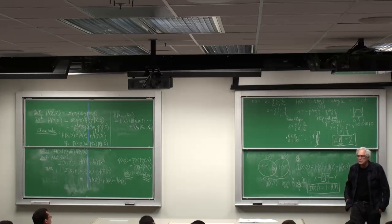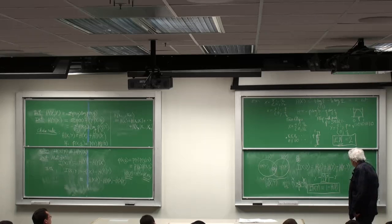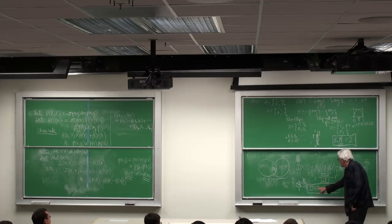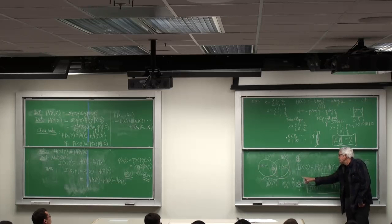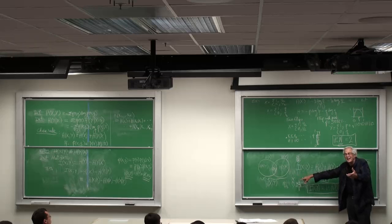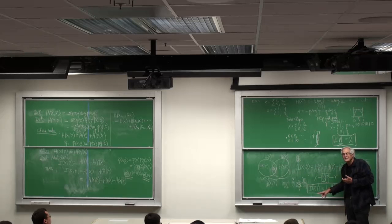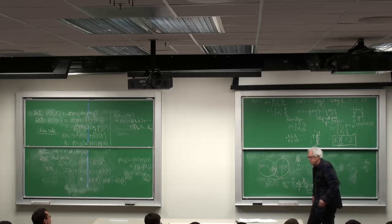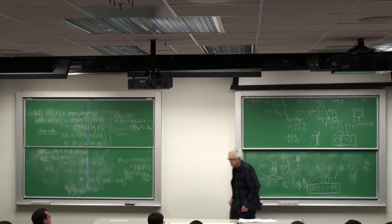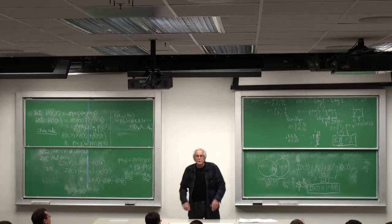And the mutual information here is the resolvability of X as seen by Y. Let me give you an example of capacity that doesn't involve randomness, for example.